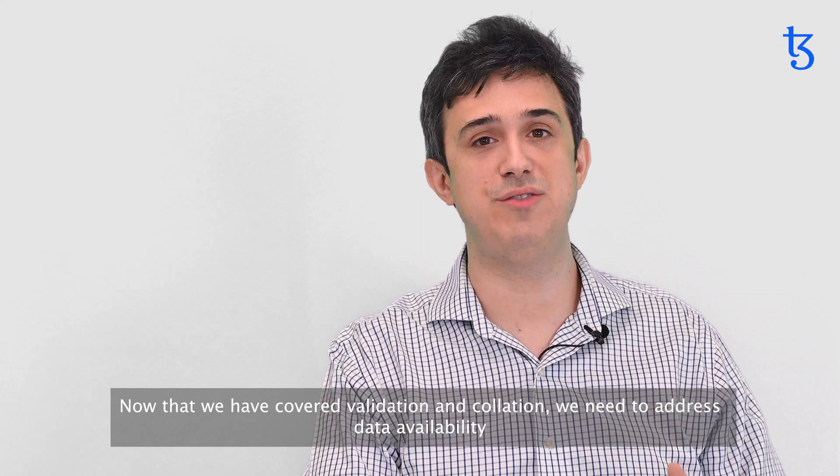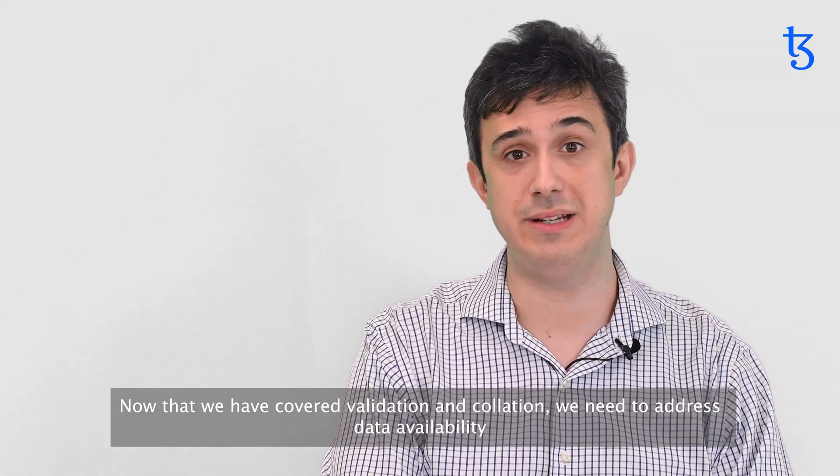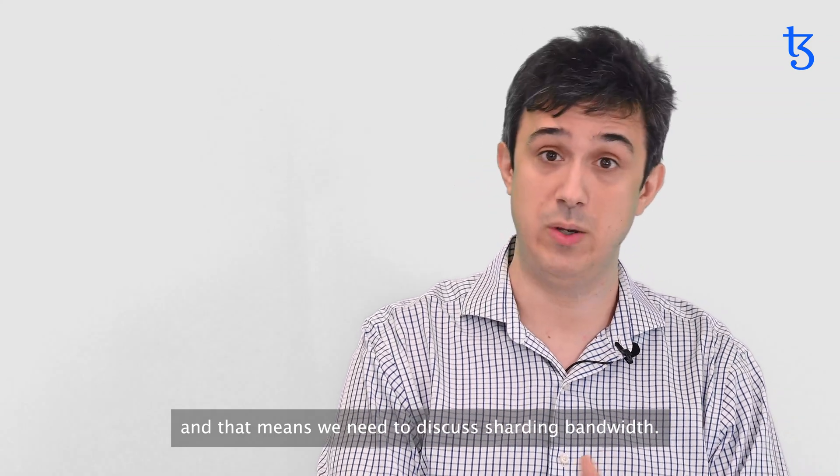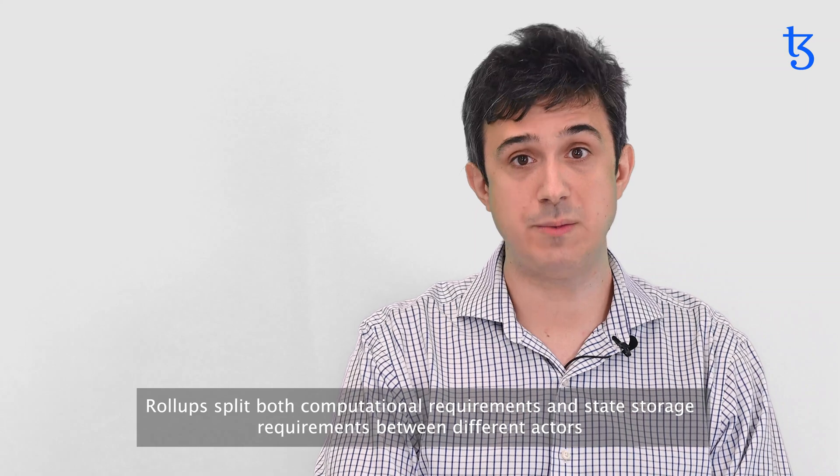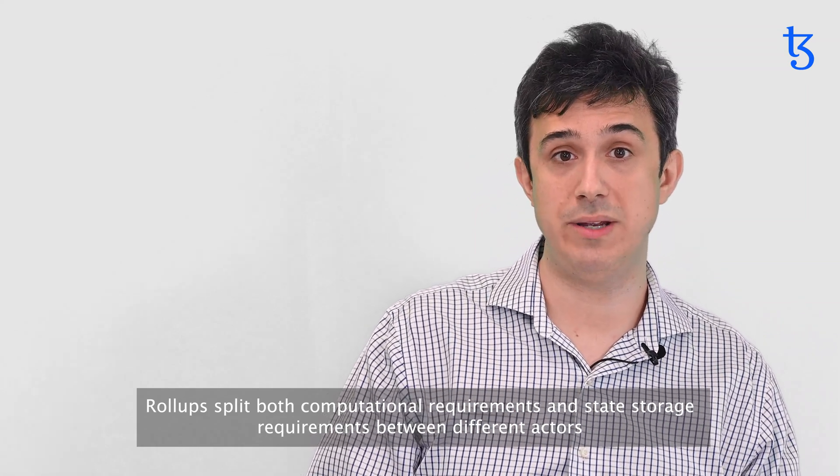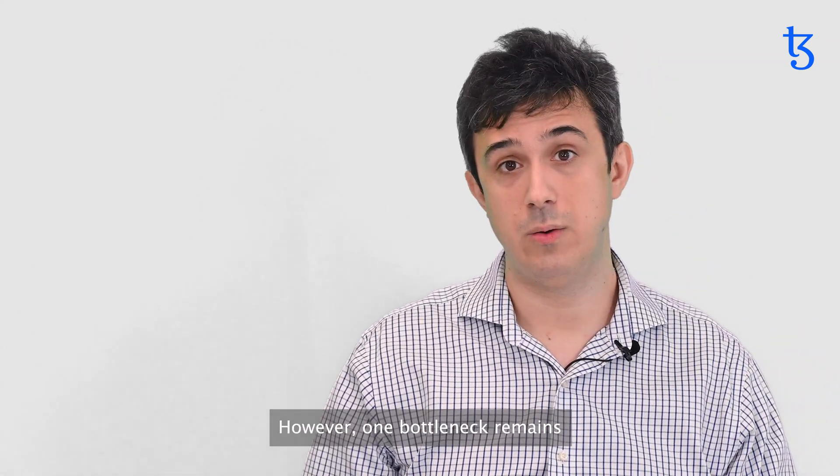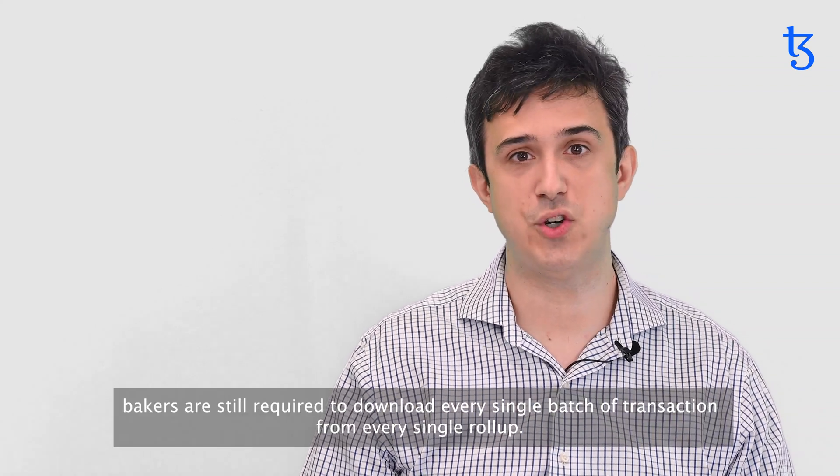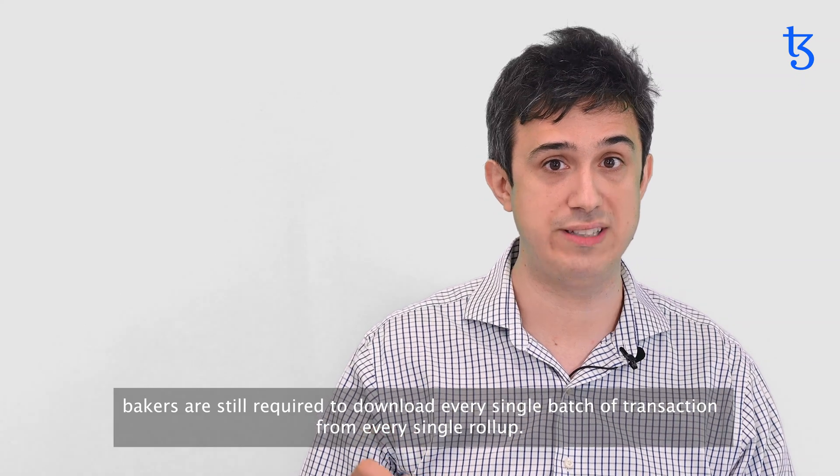So now that we've covered validation and collation, we need to address data availability. And that means we need to discuss sharding bandwidths. Rollups split both computational requirements and state storage requirements between different actors, achieving horizontal scale. However, one bottleneck remains. Bakers are still required to download every single batch of transactions from every single rollup.